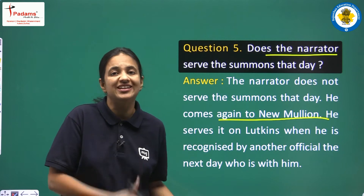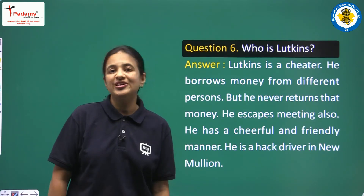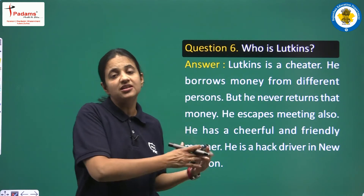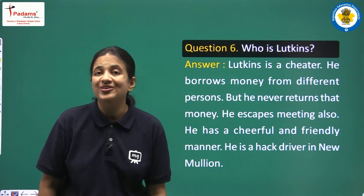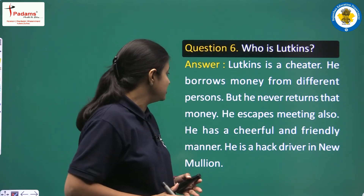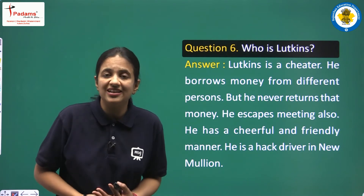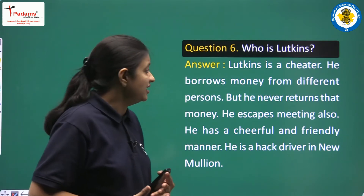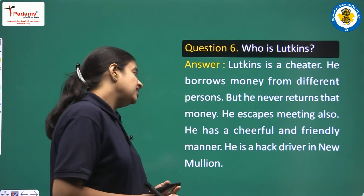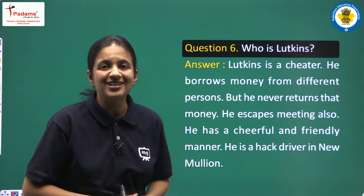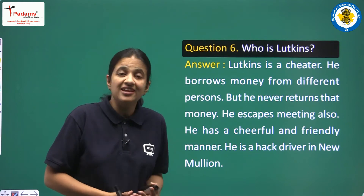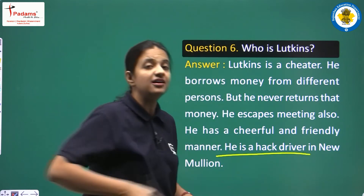Question 5: Who is Lutkins? Lutkins is a cheater — he borrows money from different persons but never returns it. He has a cheerful and friendly manner. He is a hack driver in New Mullion, and that is what he does in the town.